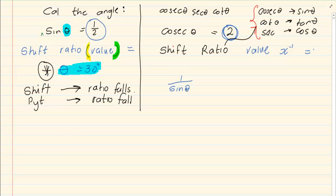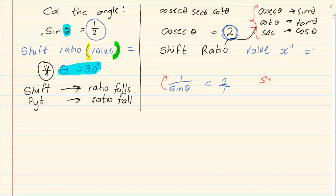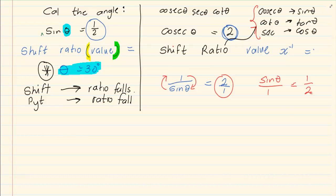So if cosec theta is equal to 2, write it as 2 over 1. Now we swap it — with fractions, if you bring the top to the bottom and the bottom to the top, it works out. So I end up with sin theta over 1 equals 1 over 2. If you swap one side you must swap the other side also. Now you can press shift, sin, 1 over 2. Remember to close your brackets and you'd still get theta is equal to 30.